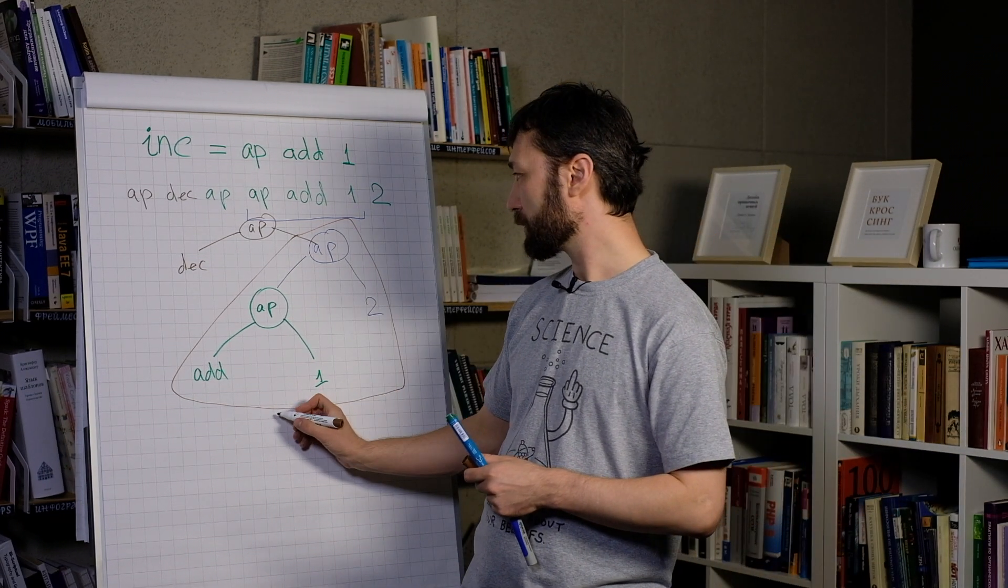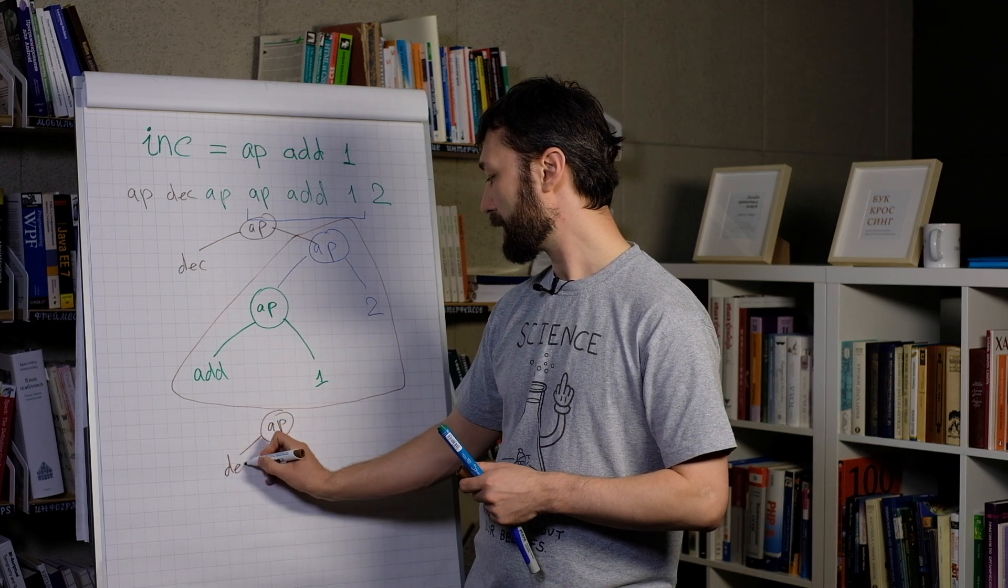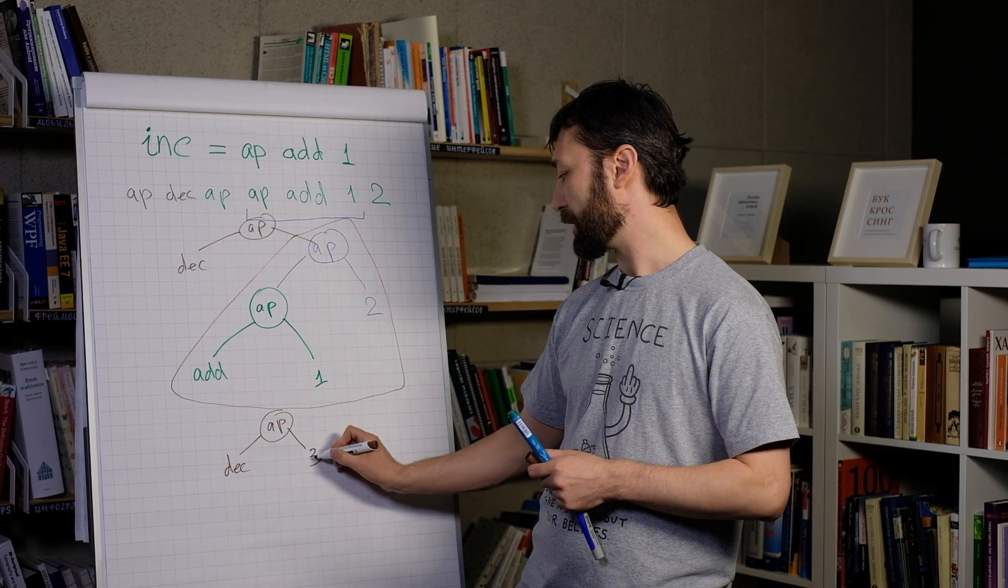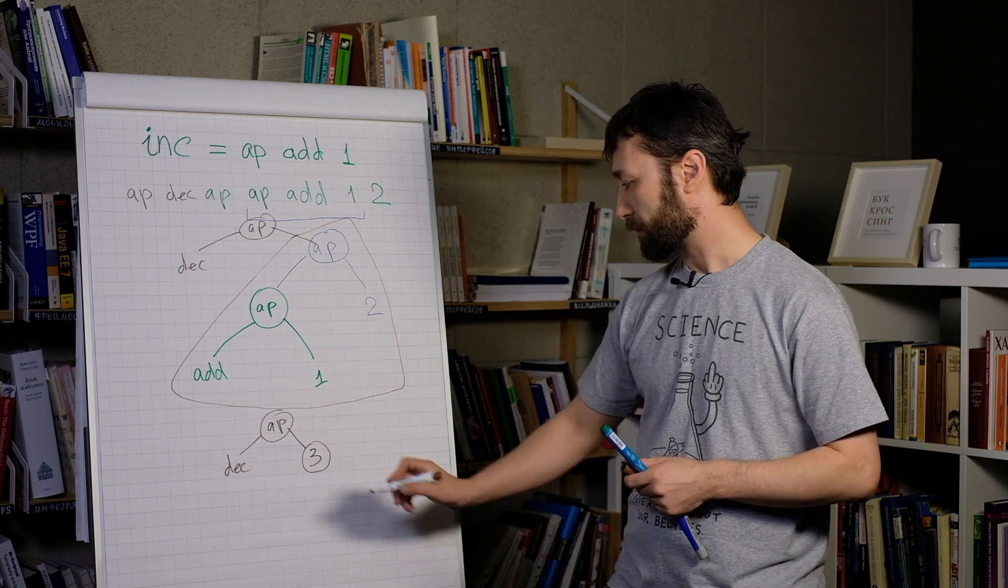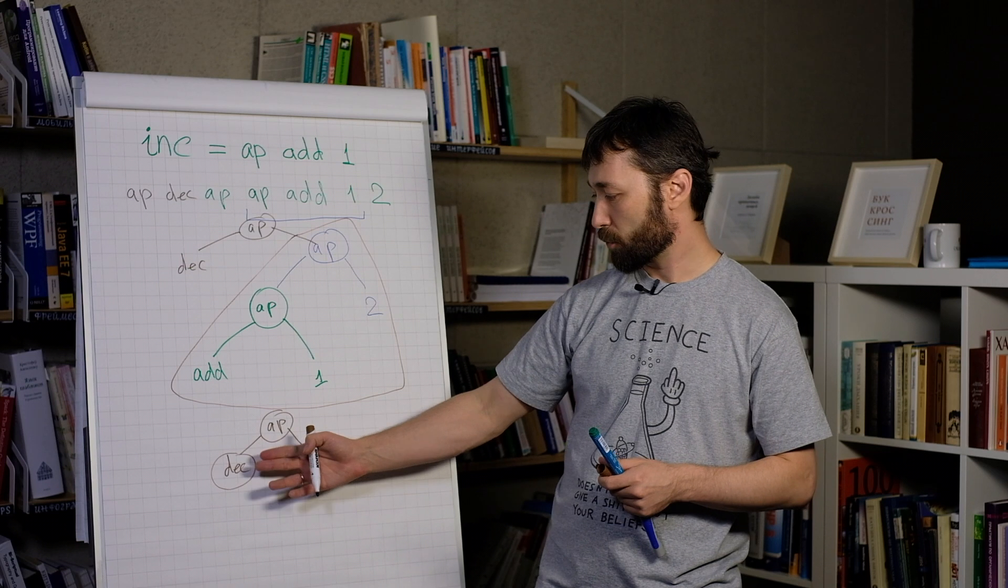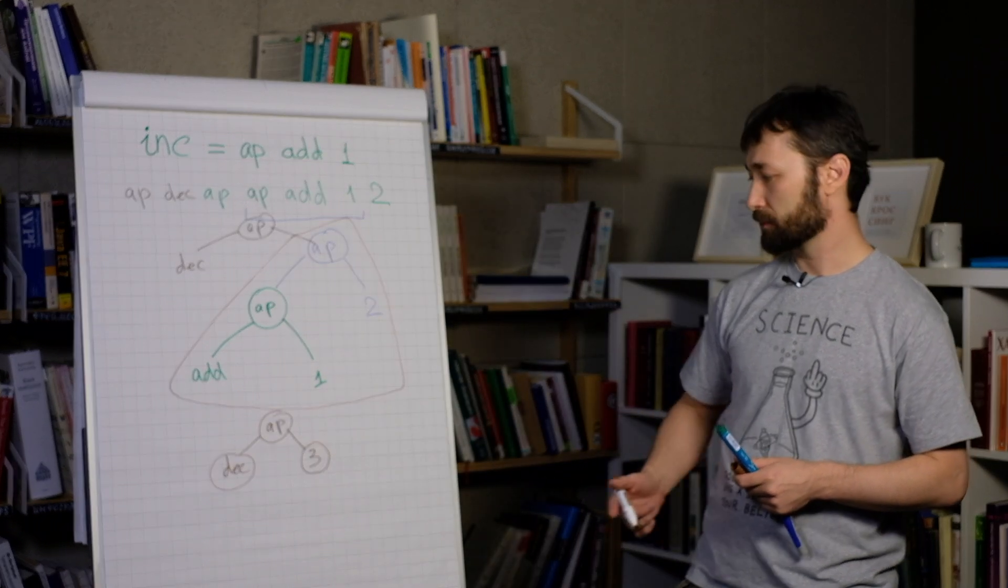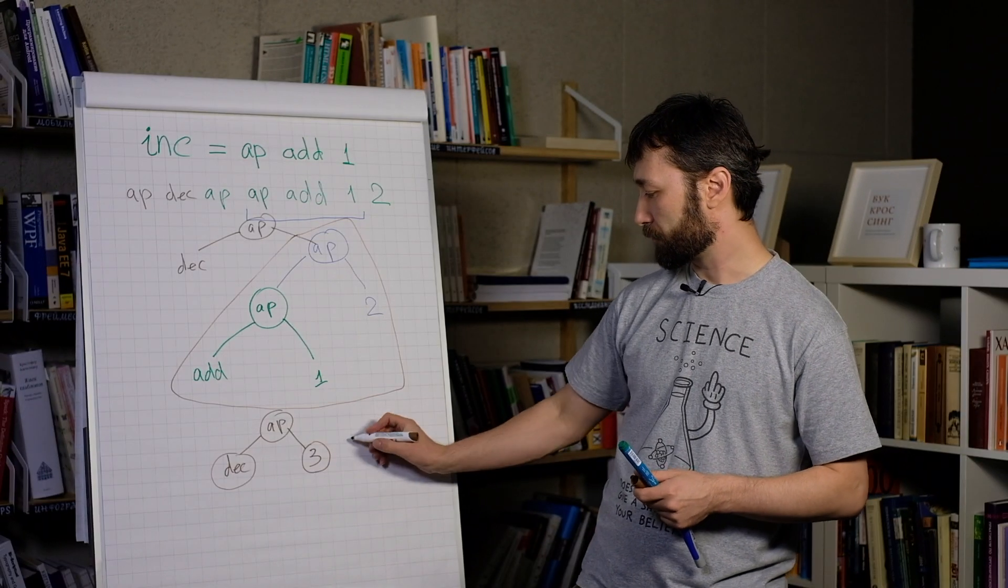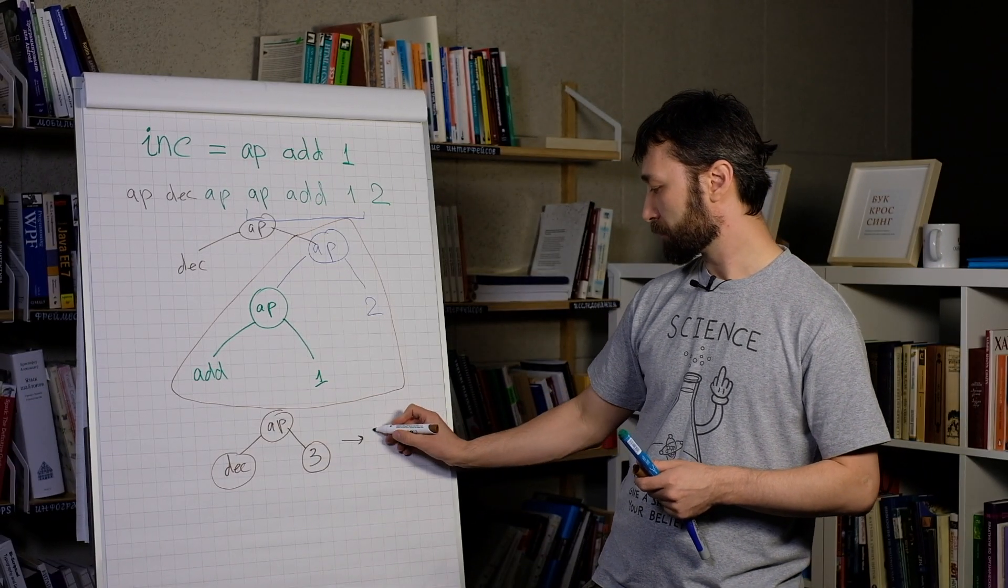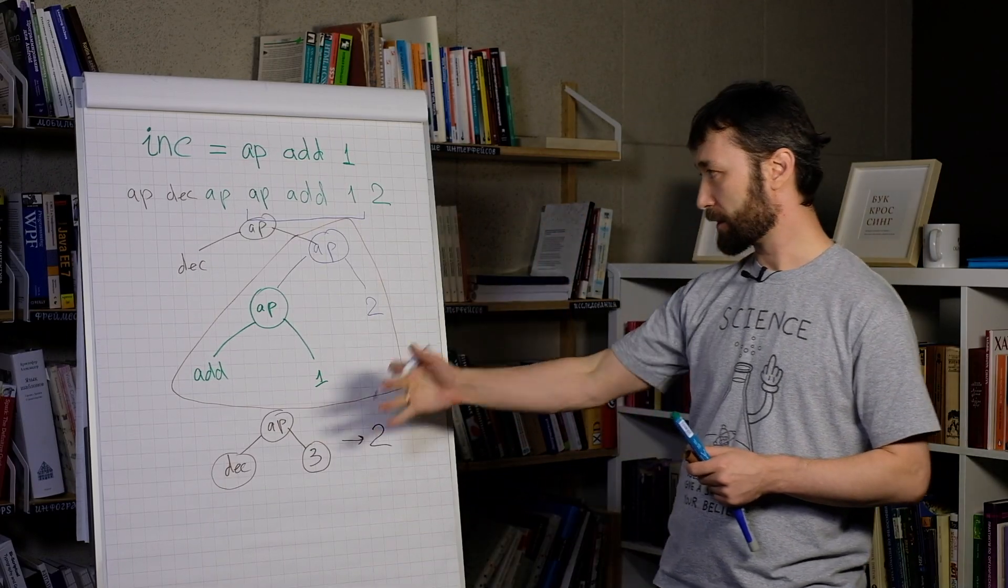So the final tree will be app, dec, 3. And now we can apply dec. Because its argument becomes a number. So this tree is evaluated to 2. Ta-da! We evaluated the expression.